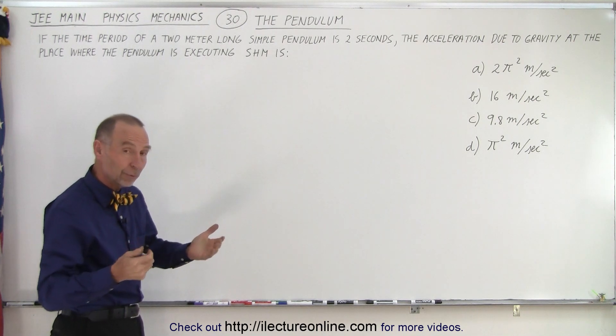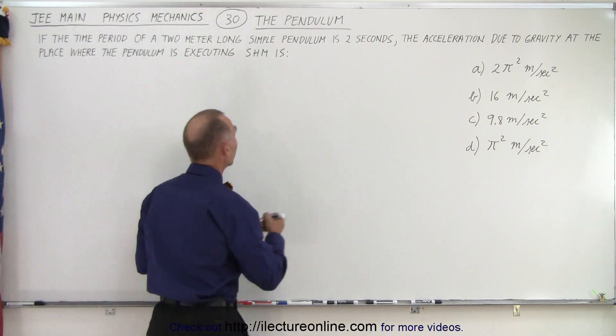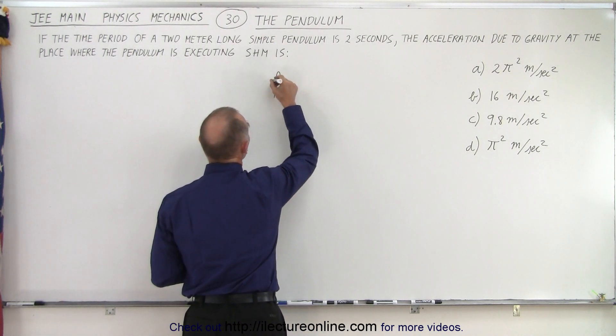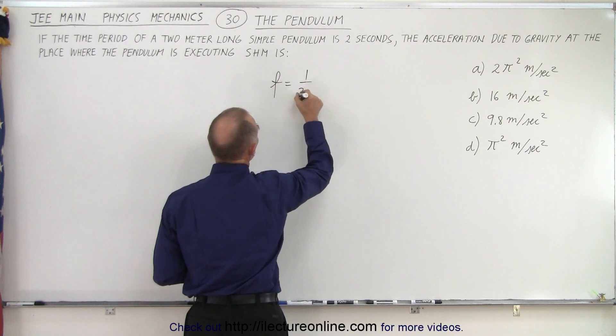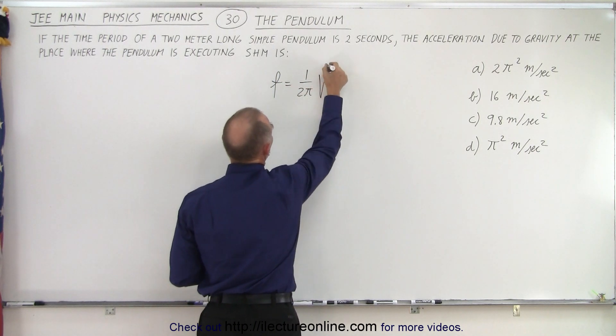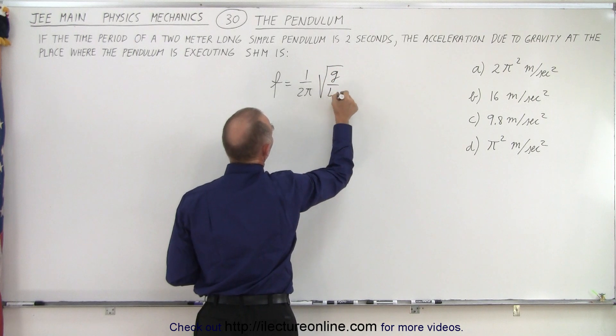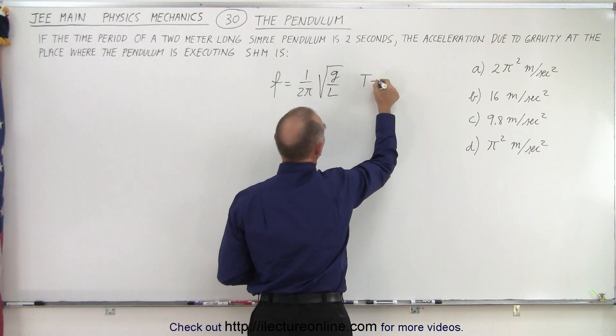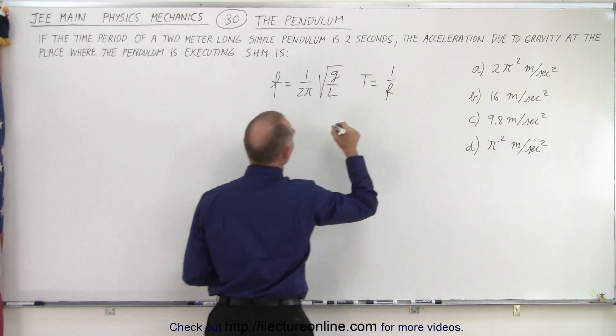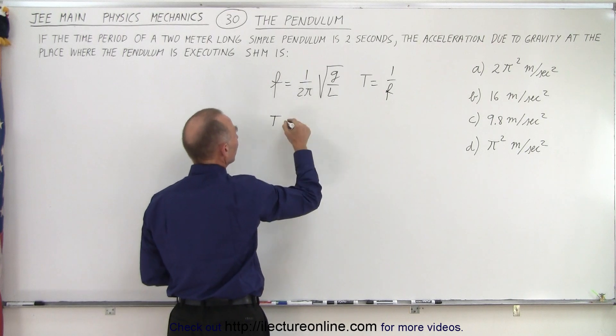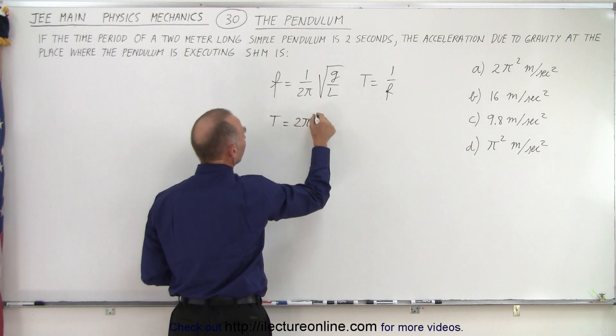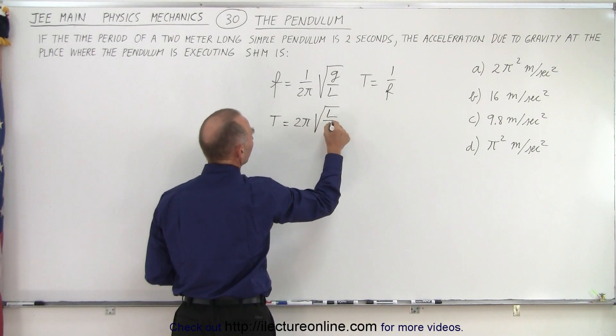So what we're going to do is write the equation of a pendulum. I remember the frequency equation. Frequency is 1 over 2π times the square root of g over l. And since the period is equal to 1 over the frequency, that means the period is the inverse of that, which is 2π times the square root of l over g. That way, I only have to remember 2 out of the 3 equations.